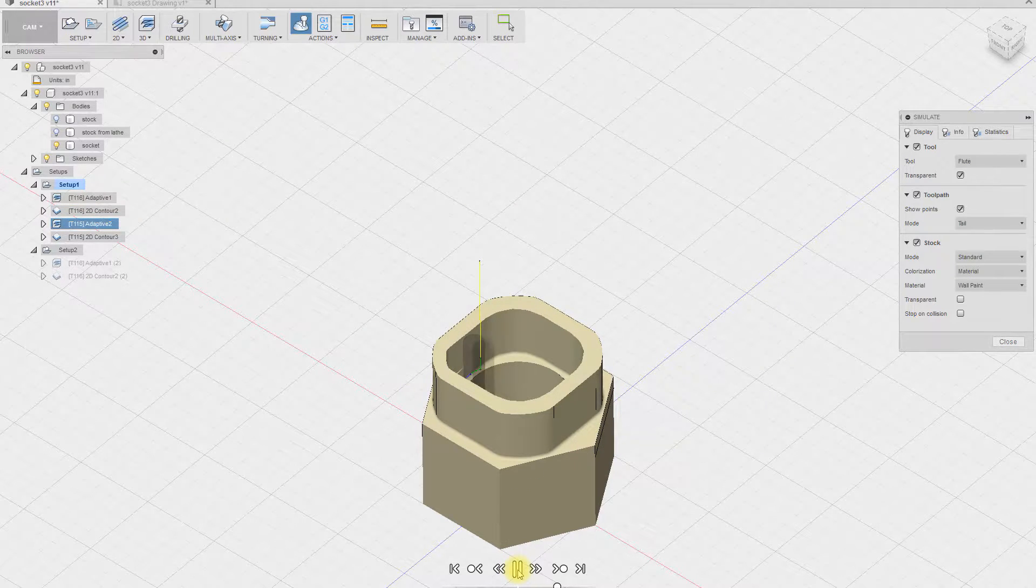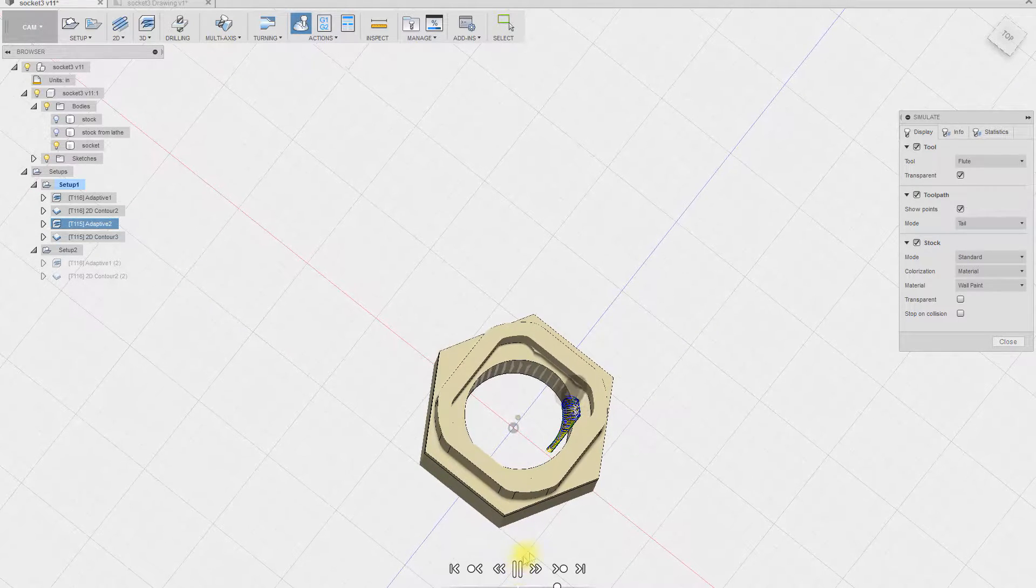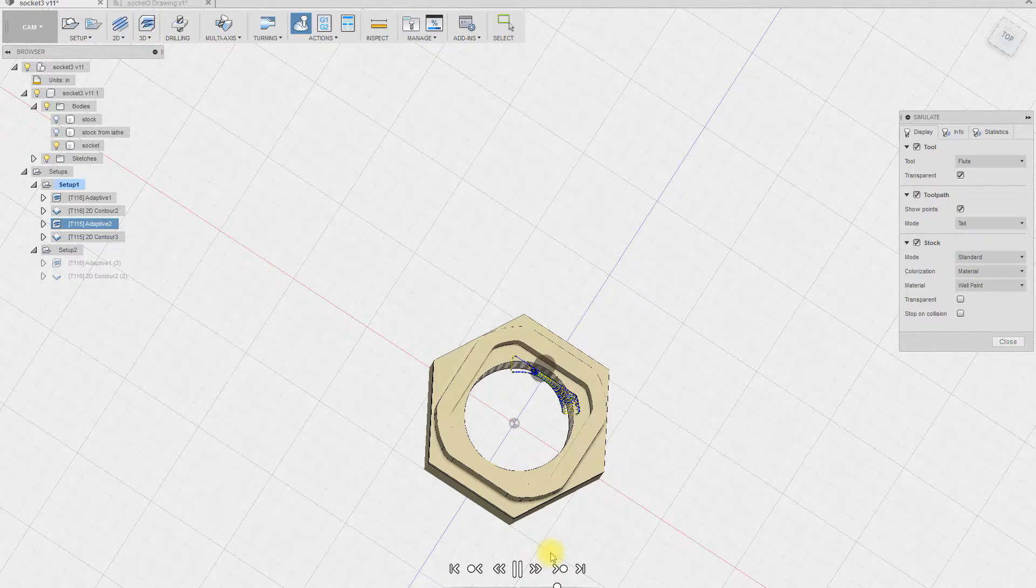Using rest machining, a 1/8 inch end mill adaptively clears material inaccessible to the 3/8 inch end mill, especially in the corners. This works well except at the bottom where the different radiuses of the two end mills results in a more complicated tool pass.